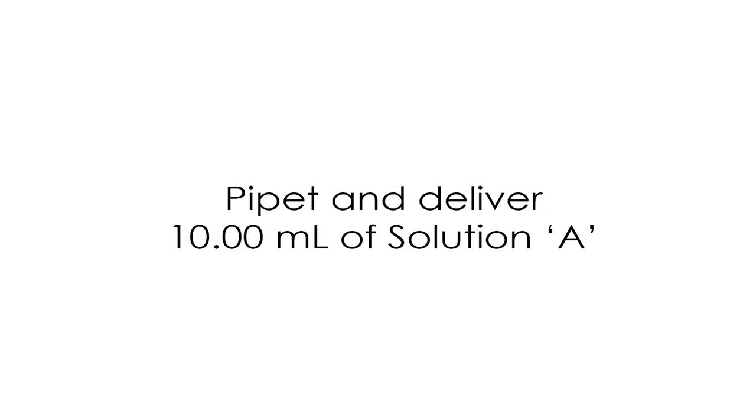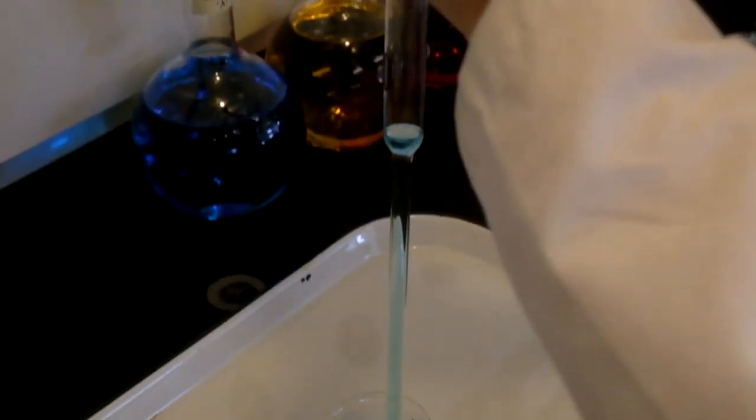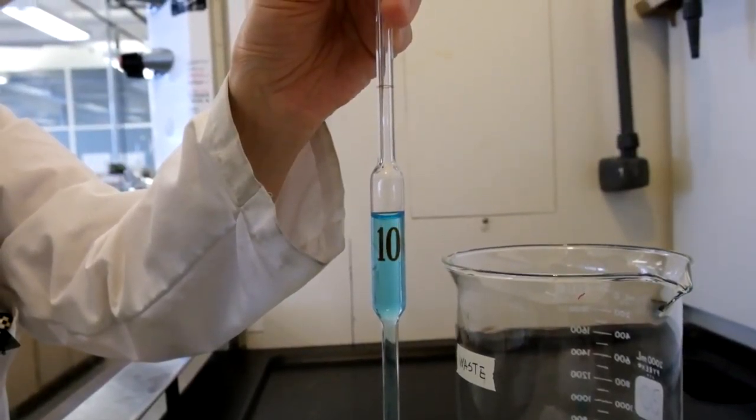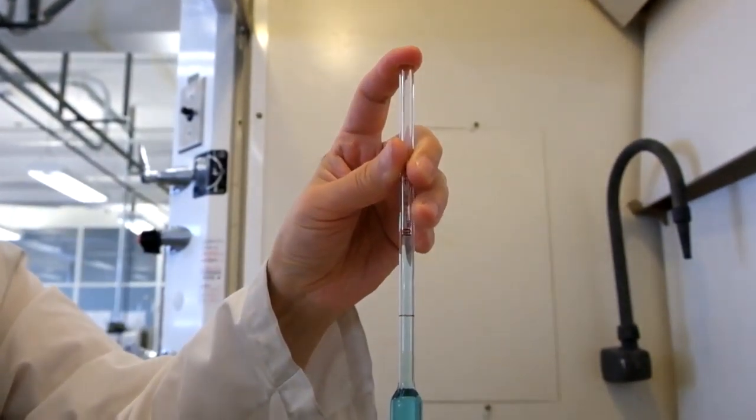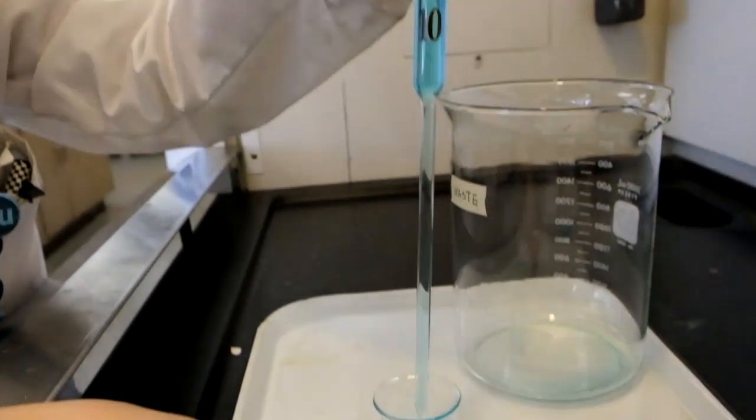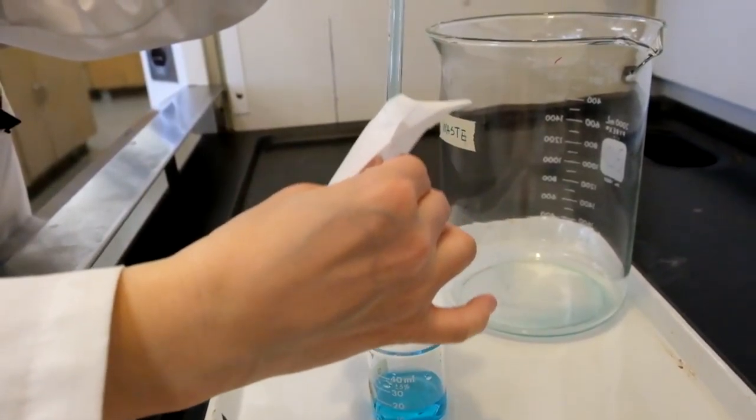Pipette and deliver 10.00 mils of solution A. Fill the pipette with the solution past the calibration mark. Remove the bulb and quickly place the index finger of the left hand over the top of the pipette to hold the level of the solution. Tilt the pipette slightly and wipe away any liquid on the outside surface.